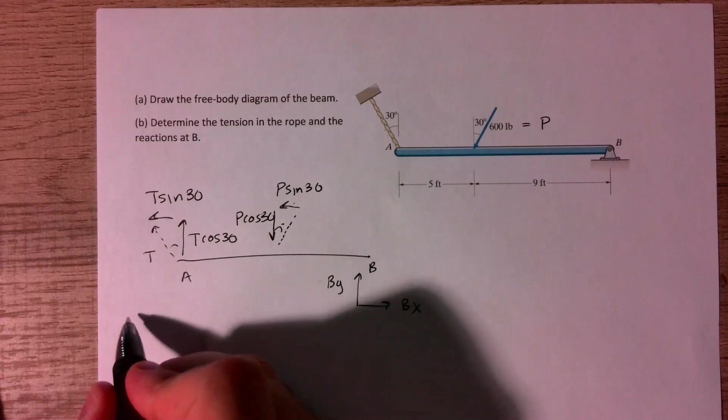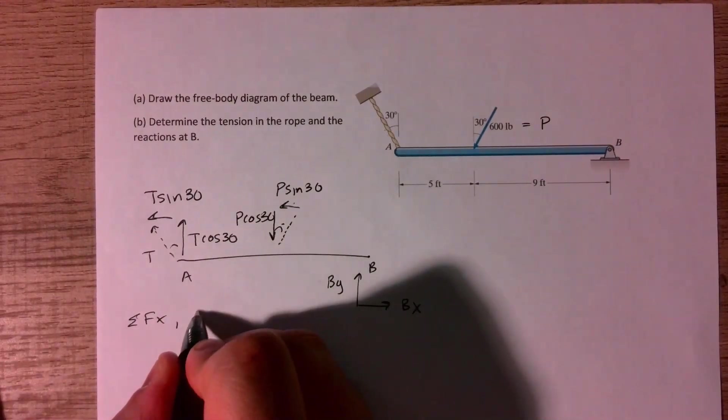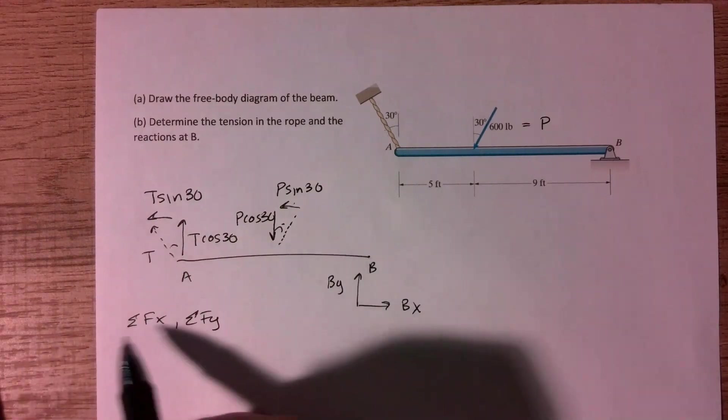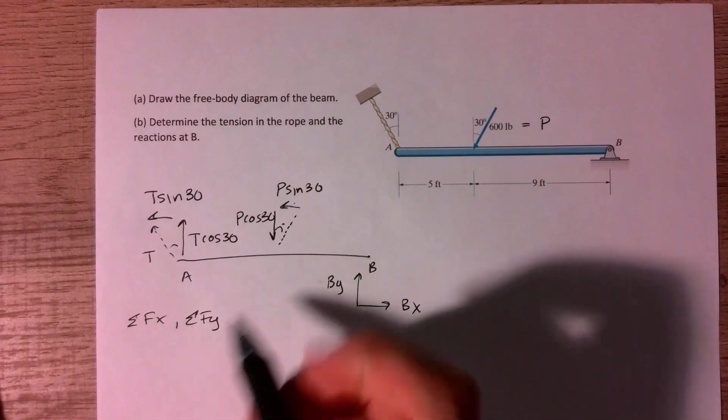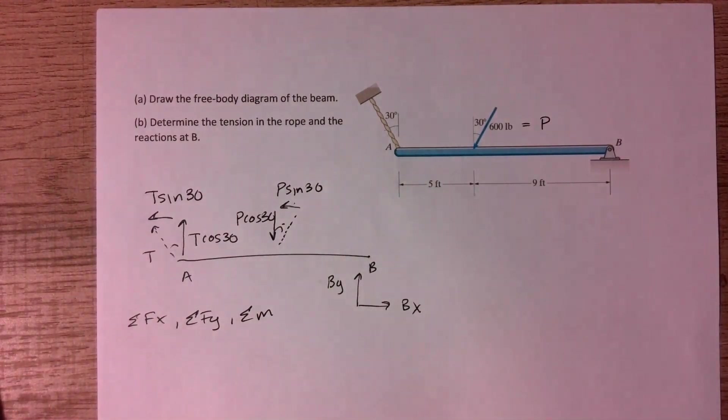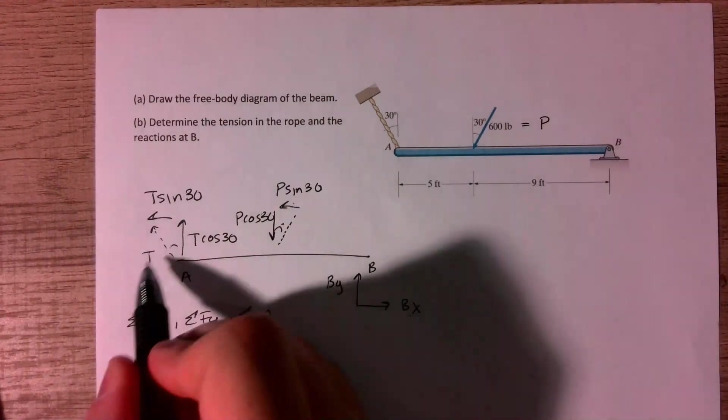So with any statics problem, after we draw our free body diagram, we want to sum our forces and set them equal to zero. So because we've broken down this into components, we can take the sum of our forces in the x direction, in the y direction, and also our moments. So we'll have three equations, and that will allow us to solve the three unknowns, Bx, By, and T.